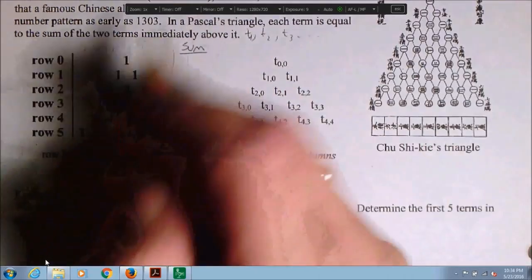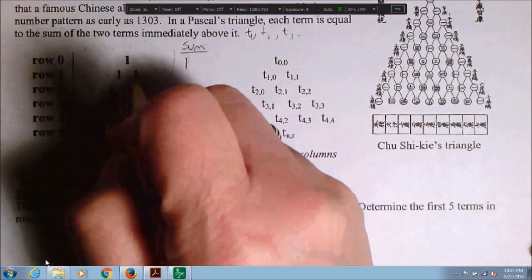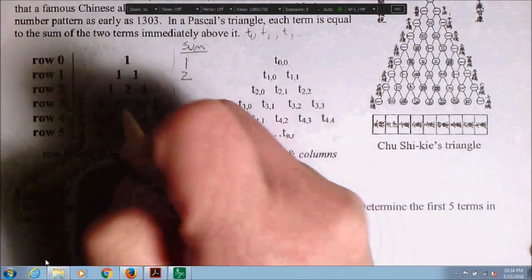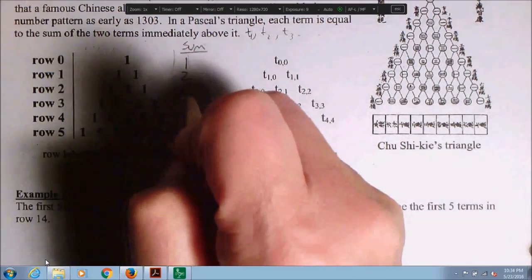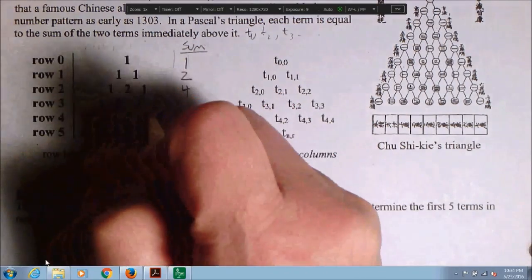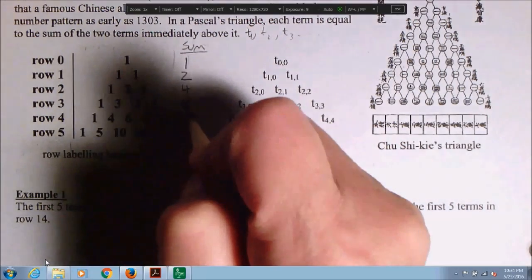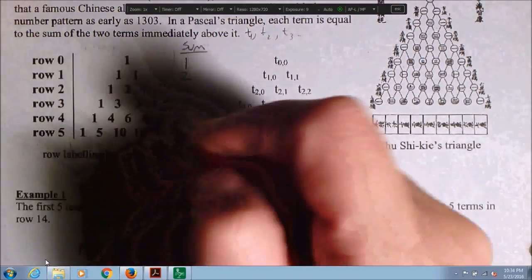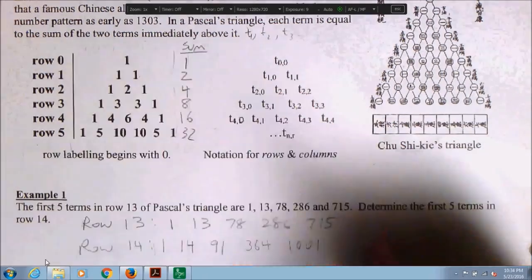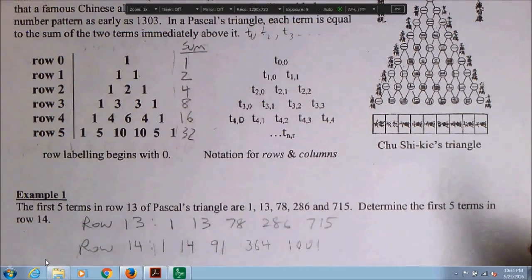So for row 0, what's the sum? If you add them all up, you get 1. And for row 1, add them up, you get 2. And row 2, add them, you get 4. Row 3, you get 8. Row 4, you get 16. And row 5, 32. Very interesting.